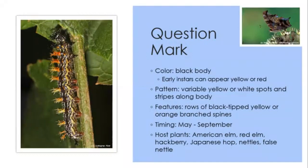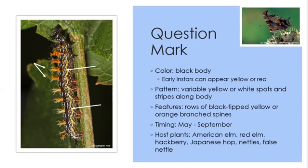The question mark butterfly has such a unique name, named for that white marking on its wing. Its caterpillar has a black body with variable yellow or white spots and stripes. The spines can be yellow to orange but always have black tips. We can also see white and black spiracles. May through September you can find them on elm trees, hackberries, and nettles.